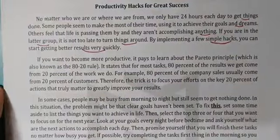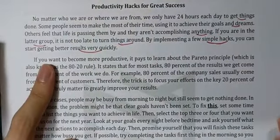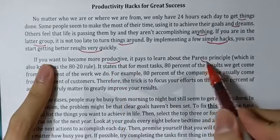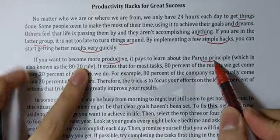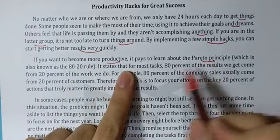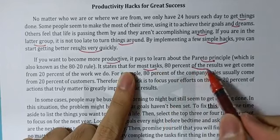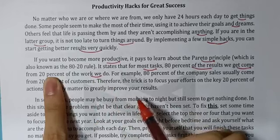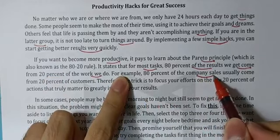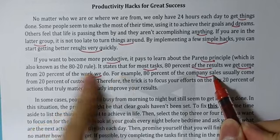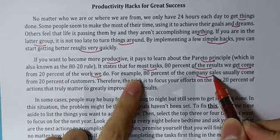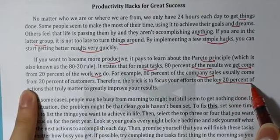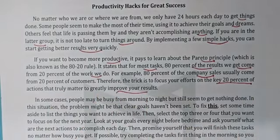Đoạn 2: Nếu muốn trở nên hiệu quả hơn, hãy học về quy tắc 80-20. Quy tắc này chỉ ra rằng hầu hết trong mọi công việc, 80% kết quả đến từ 20% công việc chúng ta làm. Ví dụ, 80% doanh số của công ty thường đến từ 20% khách hàng. Vì thế, hãy tập trung vào 20% những hành động thực sự cải thiện kết quả của chúng ta.